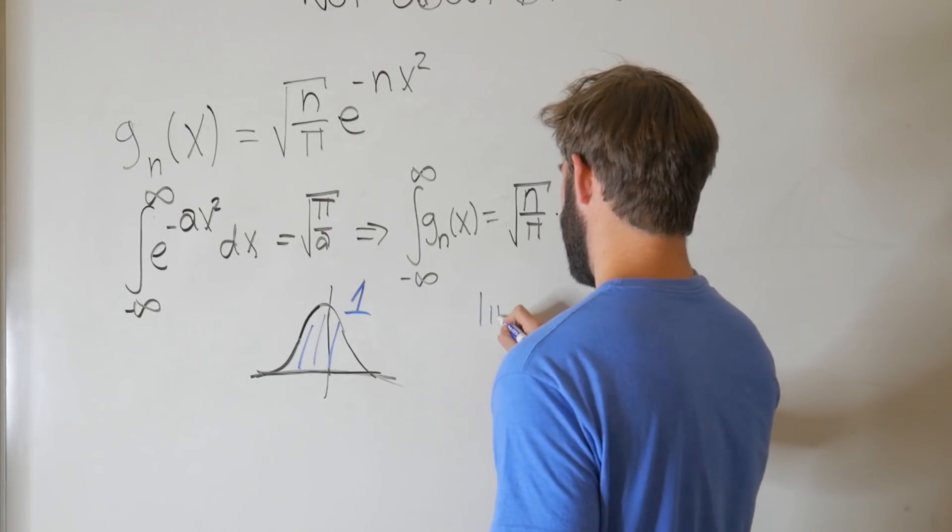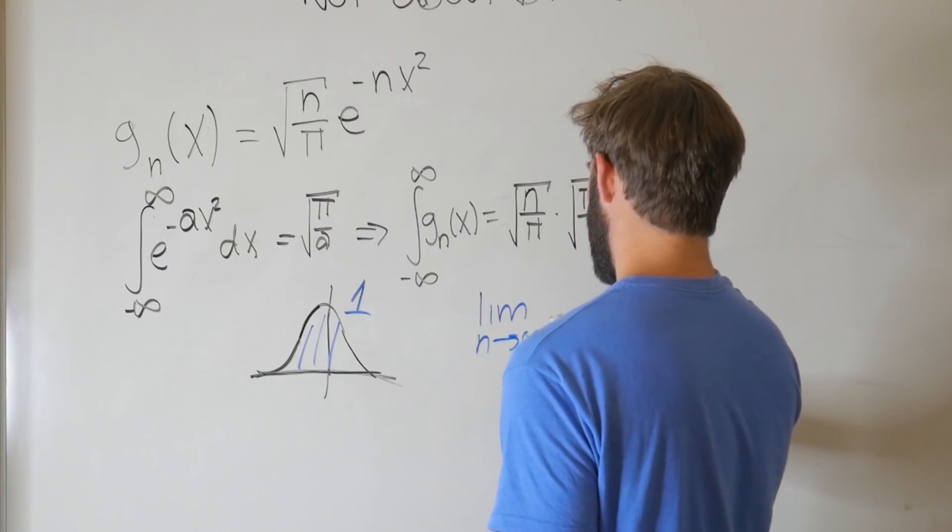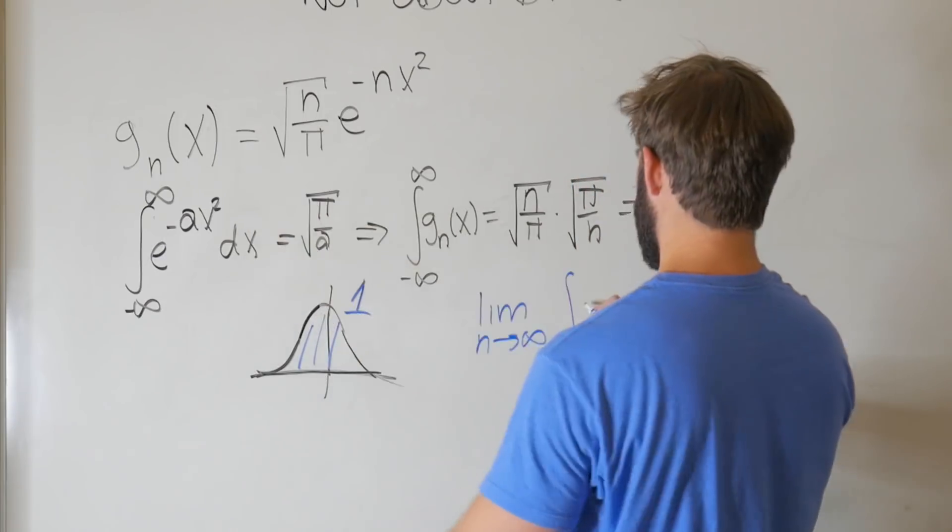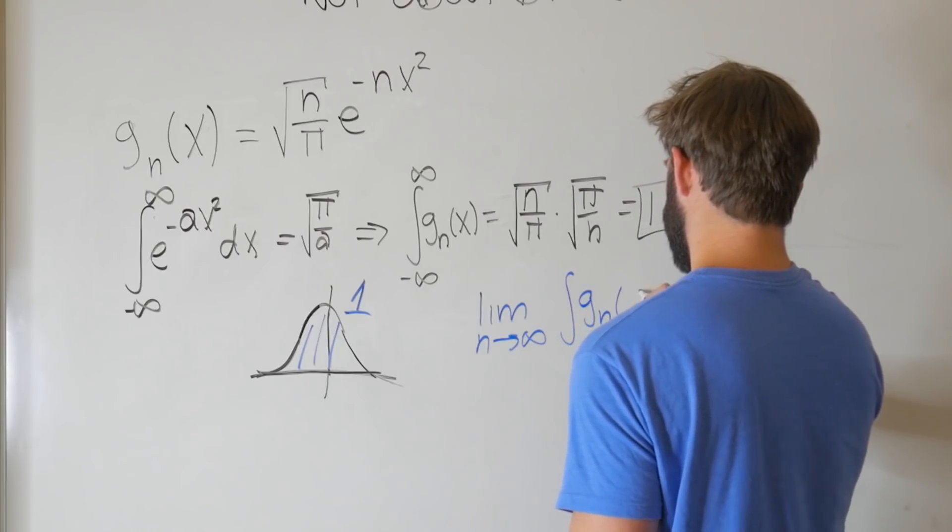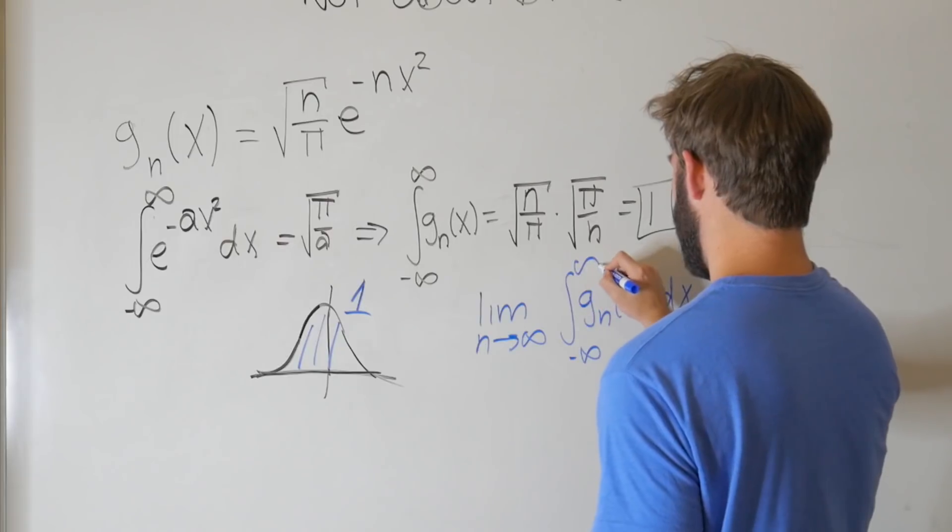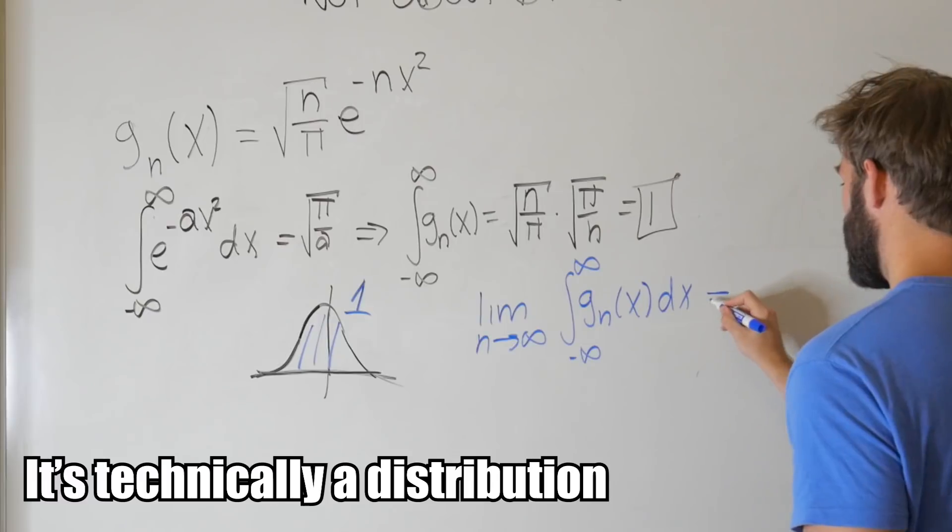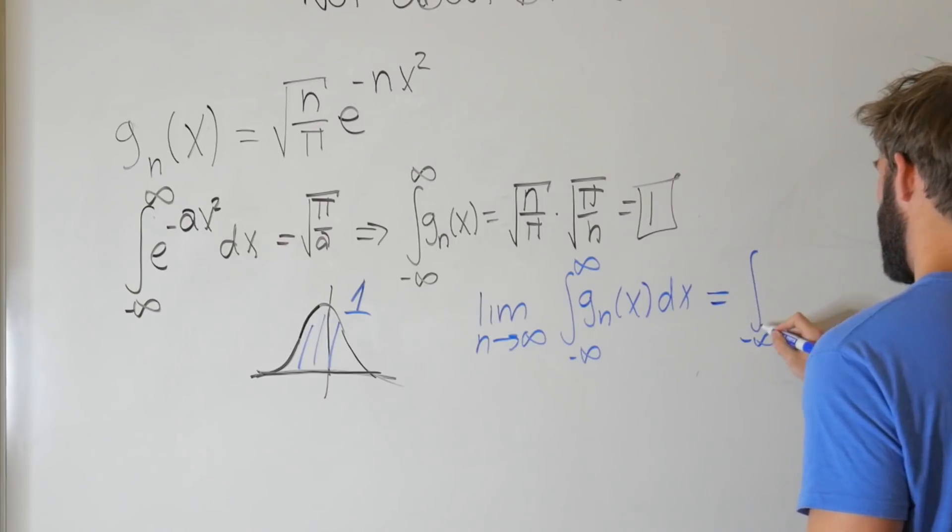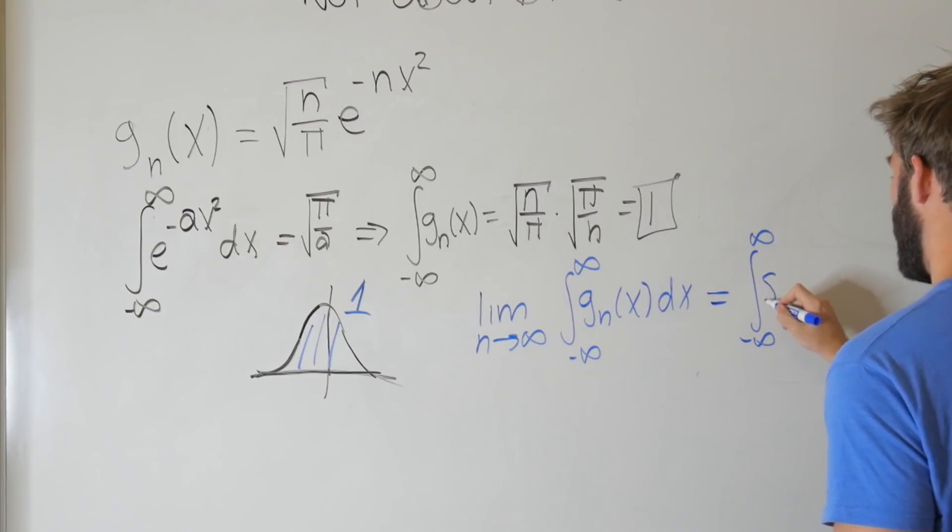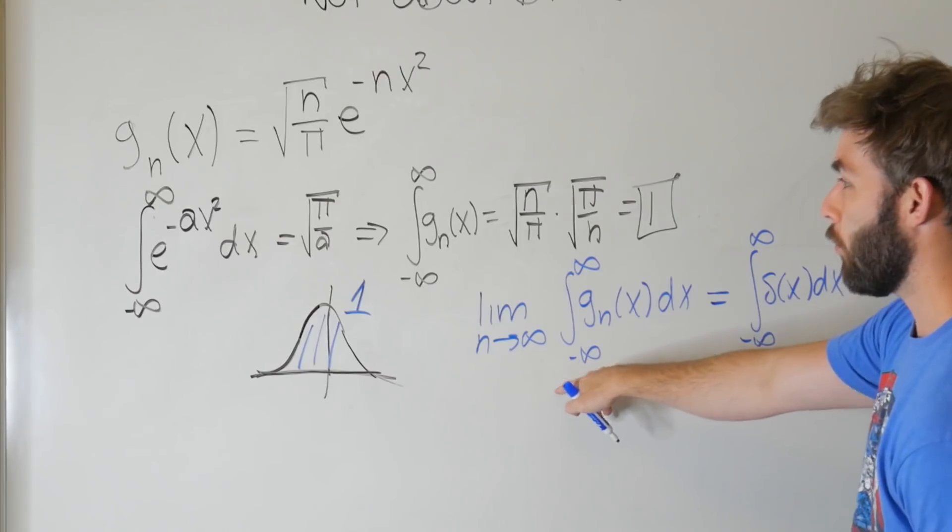And as it turns out, as you take the limit, as n goes to infinity, of this integral of g sub n of x, with respect to x, from negative infinity to infinity, this function, and I'm putting in quotes here, becomes the integral from negative infinity to infinity of the delta function with respect to x, which we all know is one.